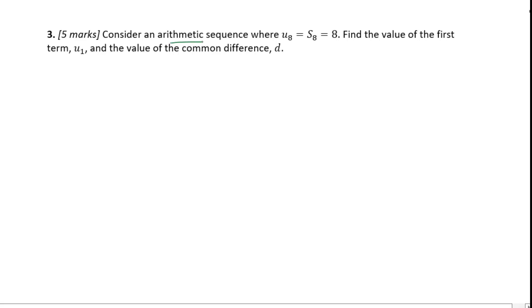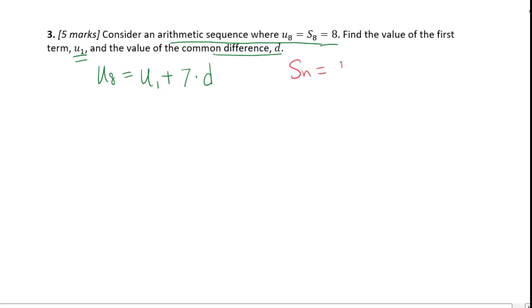Let's go to number 3. Consider an arithmetic sequence where U8 equals 8 and S8 equals 8. Find the value of the first term U1 and the common difference d. For U8, we know that is U1 plus 7d. I will use the formula S_n equals n over 2 times (2U1 plus (n minus 1)d) to get the equation for S8 equals 8.